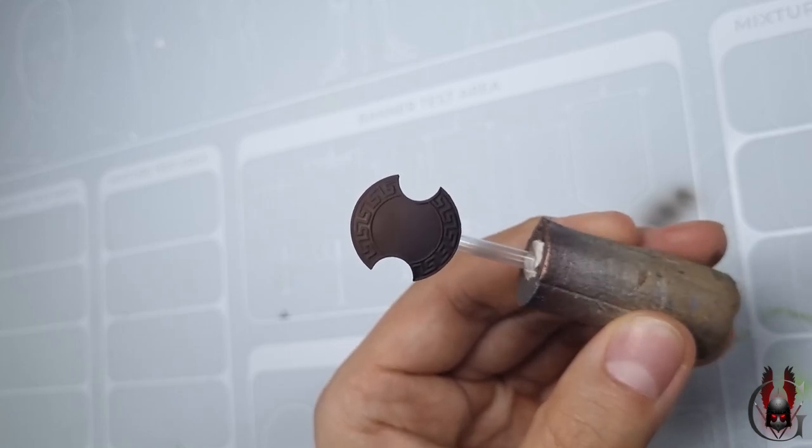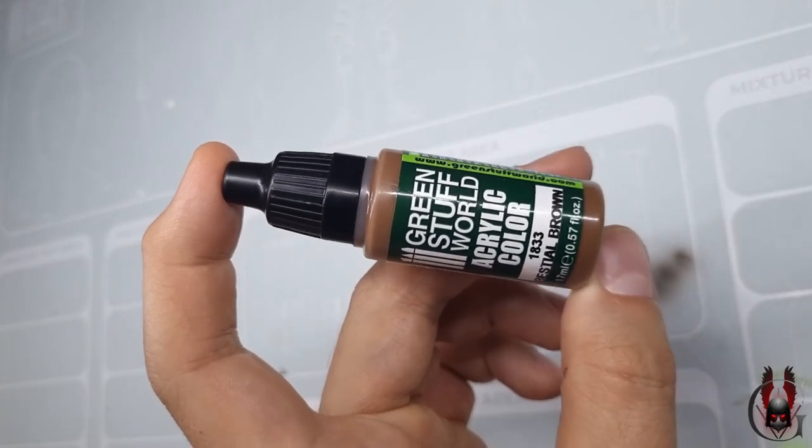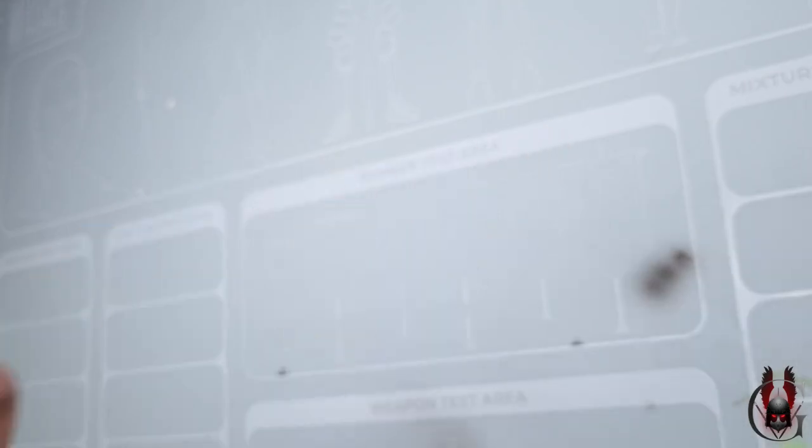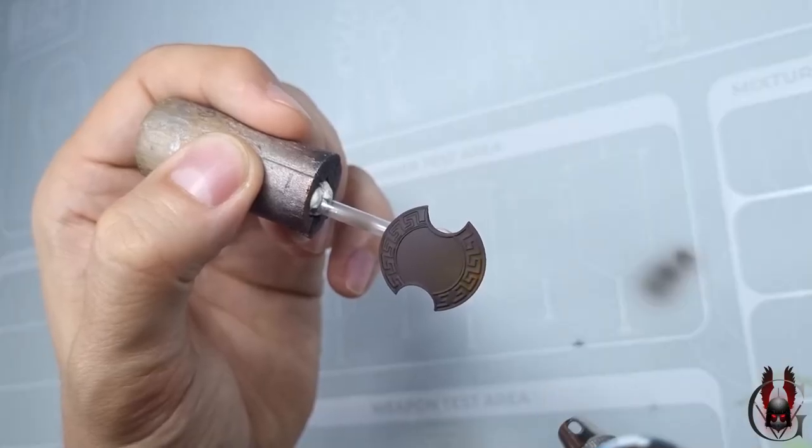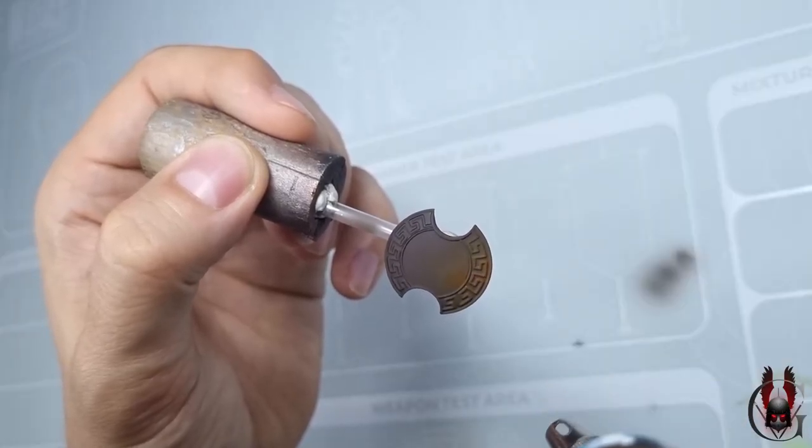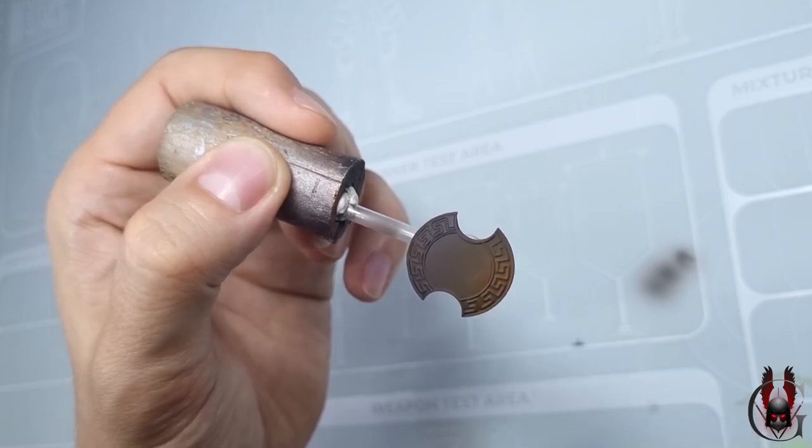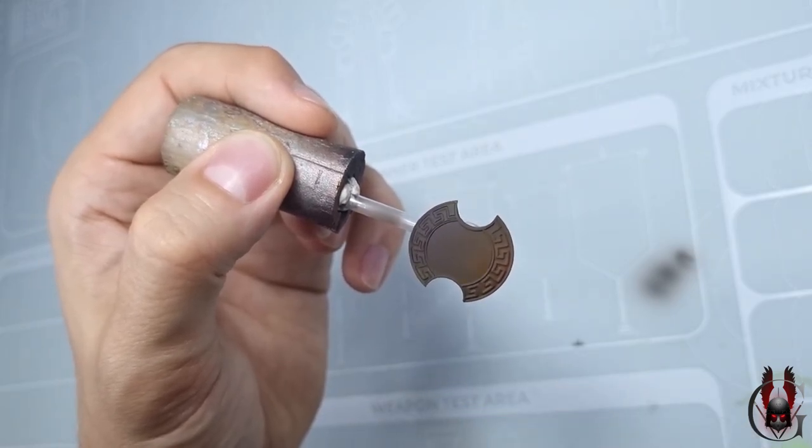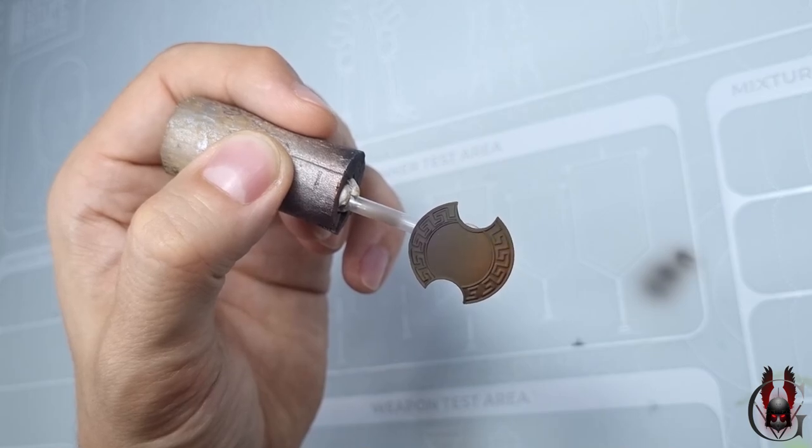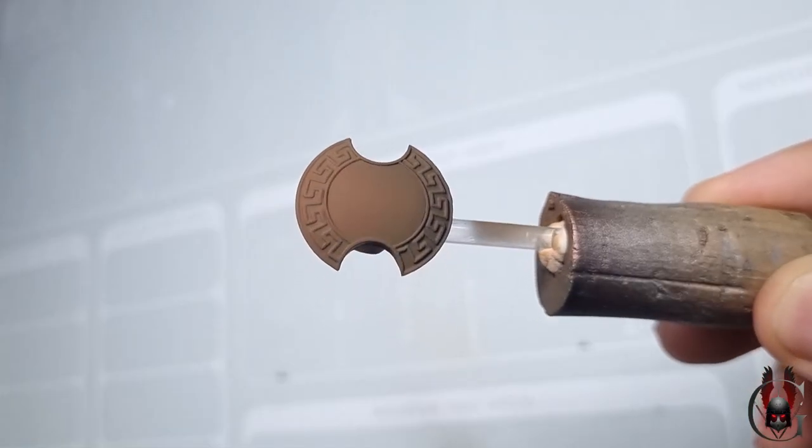Working with an airbrush speeds up that phase, which was followed directly by another zenital highlight, the Bestial Brown paint. It already creates a nice transition from black at the bottom of the shield to the saturated brown at the top of it.